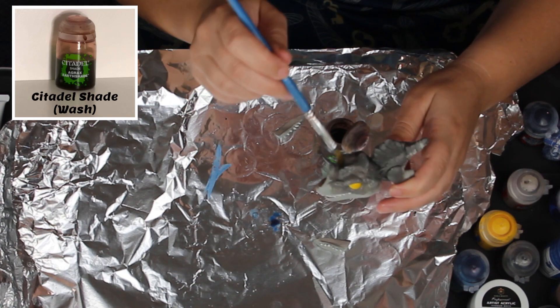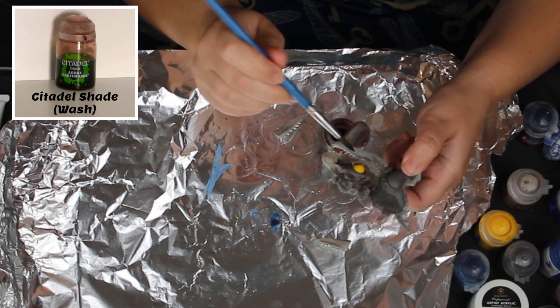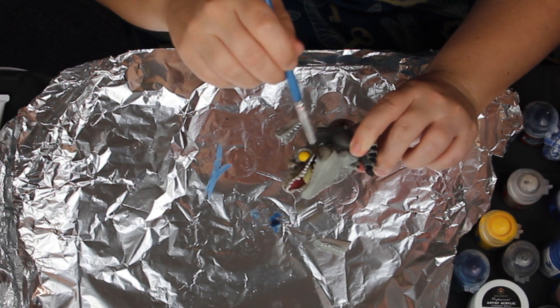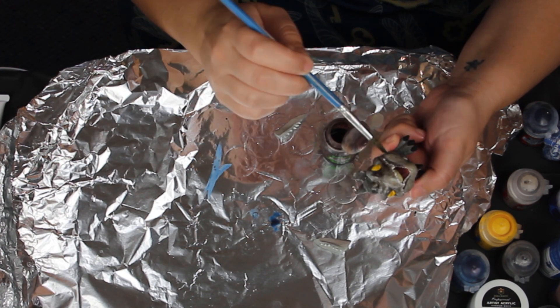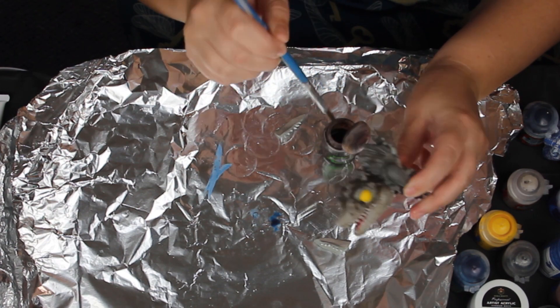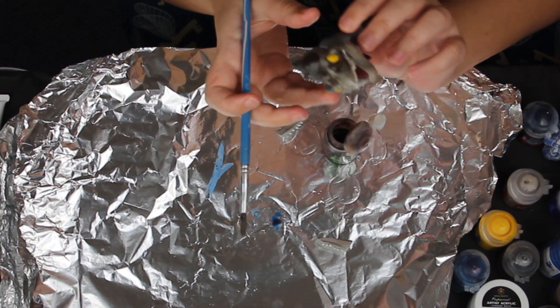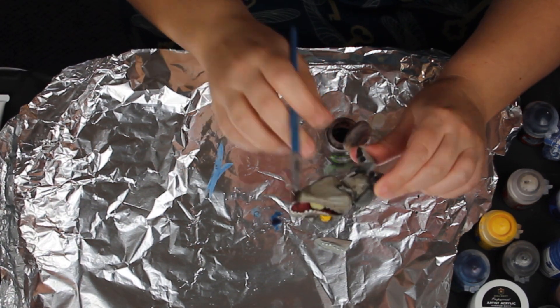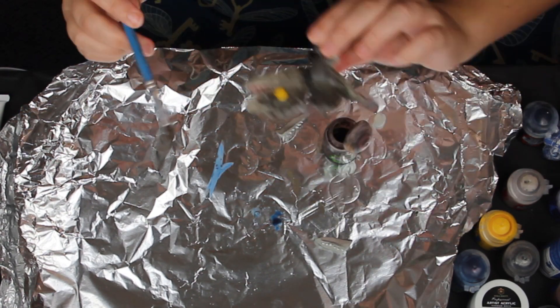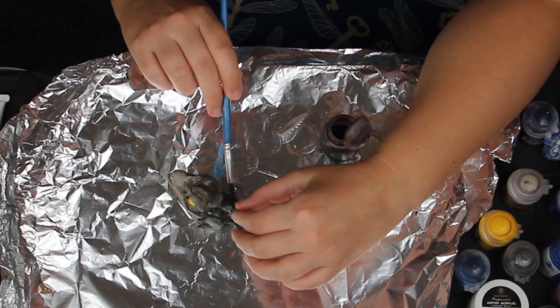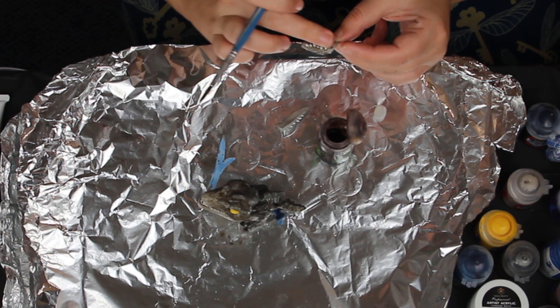And now we're going over with a nice brown wash to bring out all the detail. This is where the Hypospino really starts to take shape. Well I believe so anyway. I really love the wash effect. Brings out all the detail. And of course I can't forget the splitting jaw.